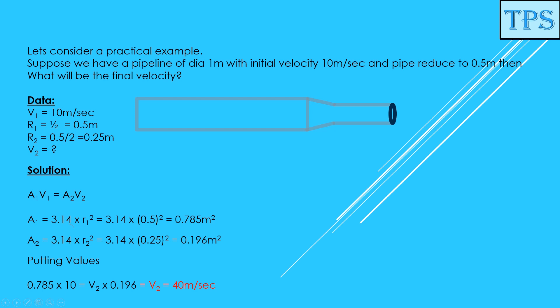A1 equals 3.14, the value of pi, multiplied by the square of r1. What is r1? 0.5 meters. Putting the values, we get area A1 equals 0.785 square meters. That is the area of the larger pipe.